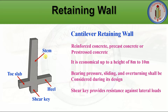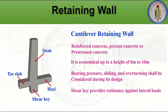The cantilever retaining wall is one of the most commonly used retaining walls. It consists of a stem, toe slab, heel slab, and shear key. It can be constructed using reinforced concrete, precast concrete, or pre-stressed concrete. Bearing pressure, sliding, and overturning must be considered in design. This type is economical up to a height of 8 to 10 meters.